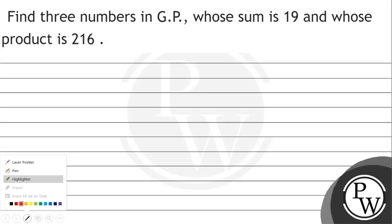Hello, I am going to read this question. The question says that find three numbers in GP whose sum is 19 and whose product is 216.